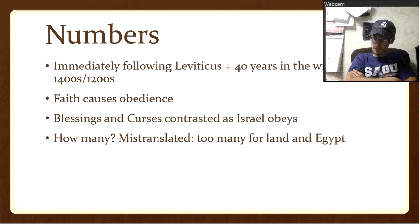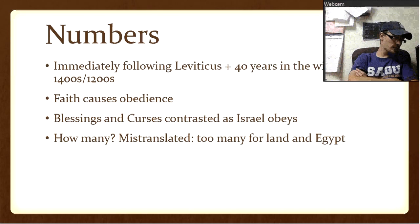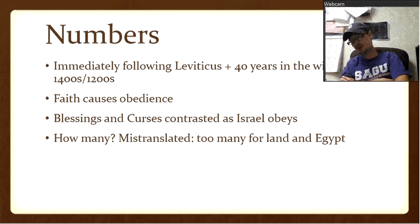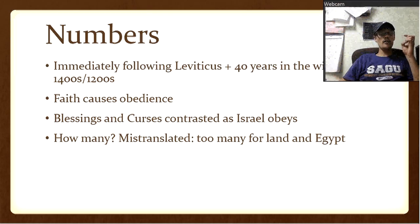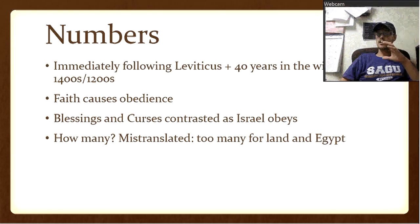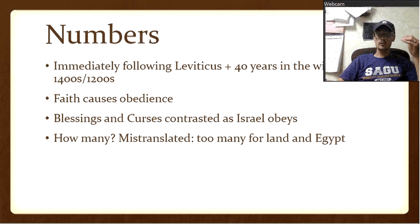Numbers is really a strong contrast. It talks about the blessings, but then we see a bunch of curses given to Israel — because they didn't obey. God is faithful and loving. When we mess up, he's not waiting to punish us — what he's looking for is a heart surrendered to him. Israel wouldn't surrender their heart; they kept rebelling. Numbers shows blessings and curses according to obedience.